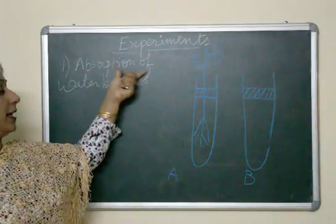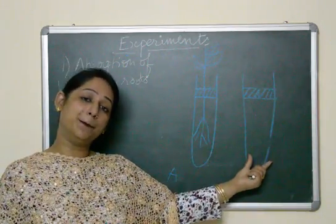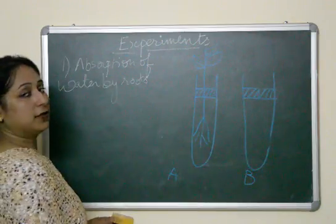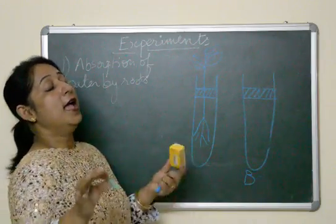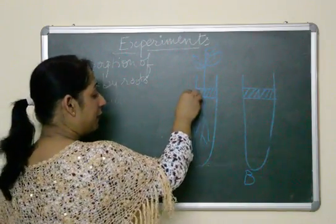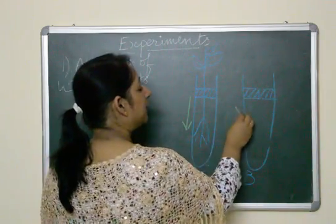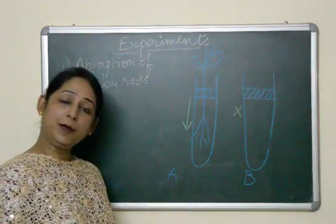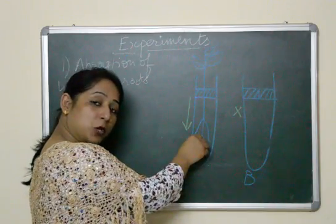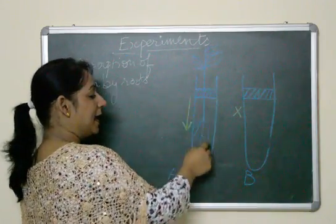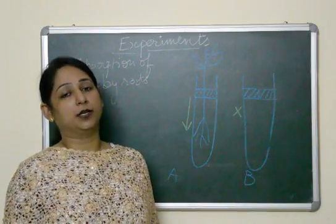After some time, we will observe that the water level comes down in test tube A, but there is no change in test tube B. This is because the plant with roots is absorbing water and delivering it to the leaves, causing the level to drop. In test tube B there is no plant, so the water level remains unchanged.